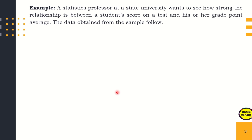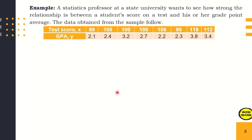For example, a statistics professor at a state university wants to see how strong the relationship is between a student's score on a test and his or her grade point average. The data obtained from a sample: test scores (x) are 98, 100, 100, 100, 106, 95, 116, 112, with corresponding GPA values (y) of 2.1, 2.4, 3.2, 2.7, 2.2, 2.3, 3.8, and 3.4.